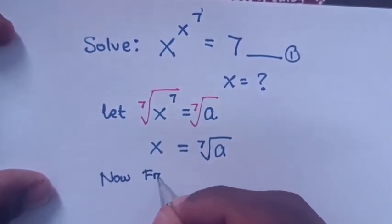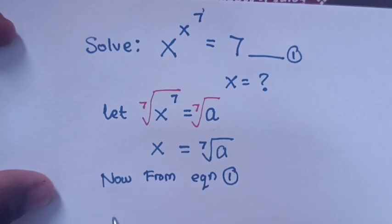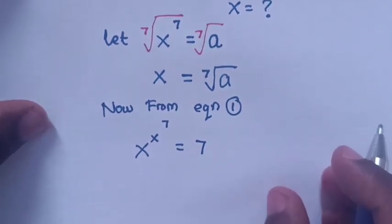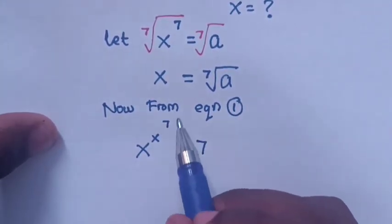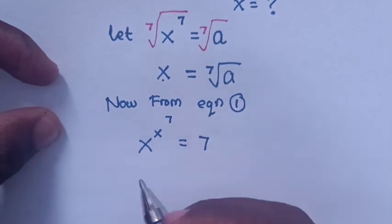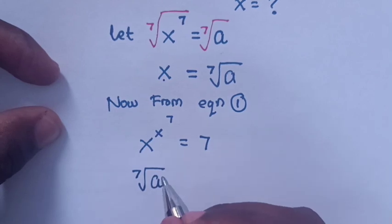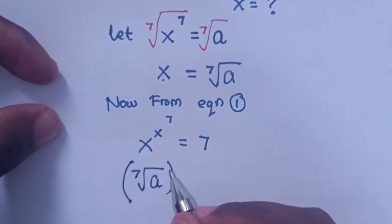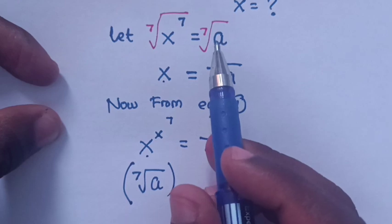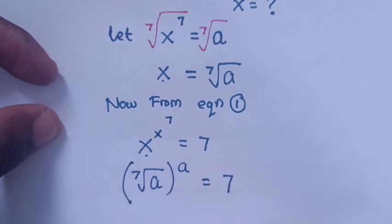From equation 1, which is x power x power 7 is equal to 7, we know that x is equal to the 7th root of a. So we substitute it in. The 7th root of a, raised to the power x power 7 — and remember we let x power 7 equal to a — so here in bracket, power a is equal to 7.